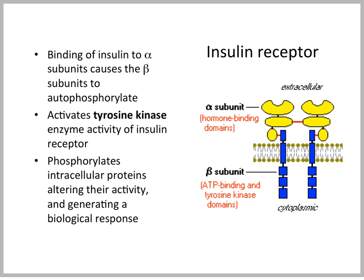Binding of insulin to the alpha subunits causes the beta subunits to autophosphorylate a tyrosine kinase residue. This leads to phosphorylation of several intracellular proteins, which alters their activity and generates a biological response.